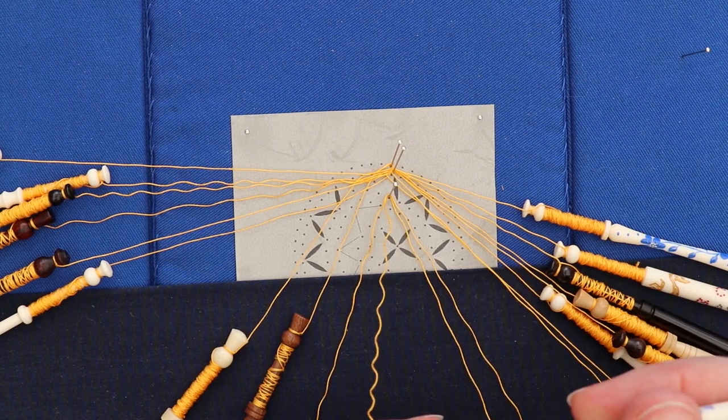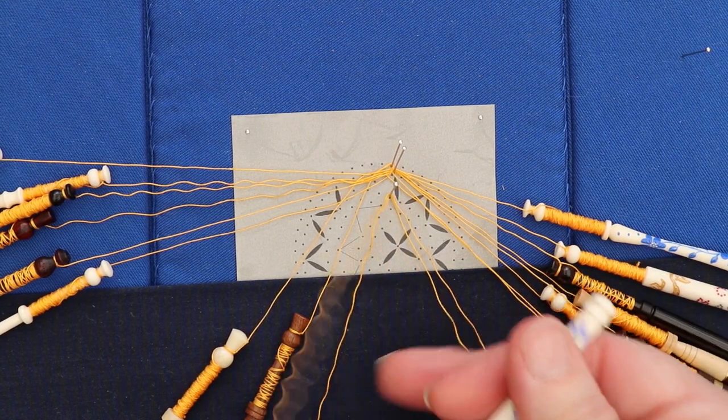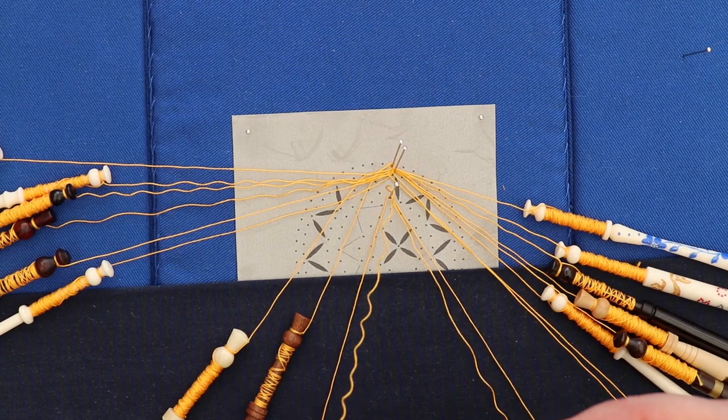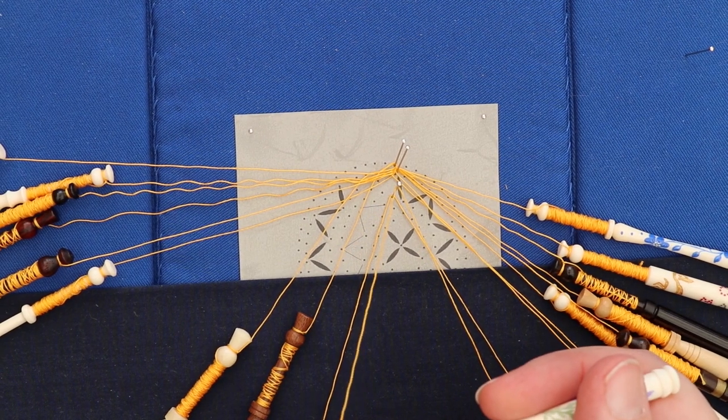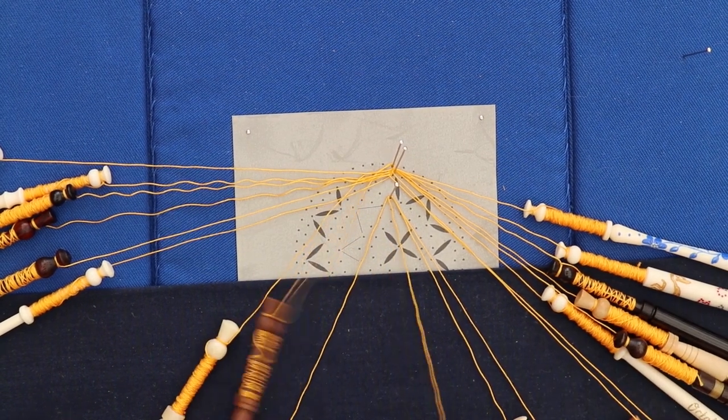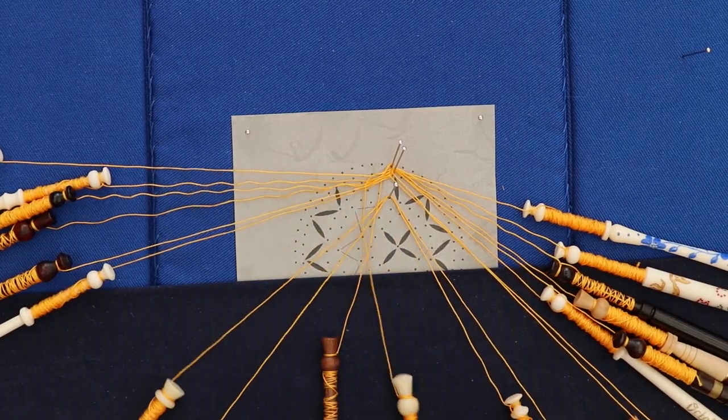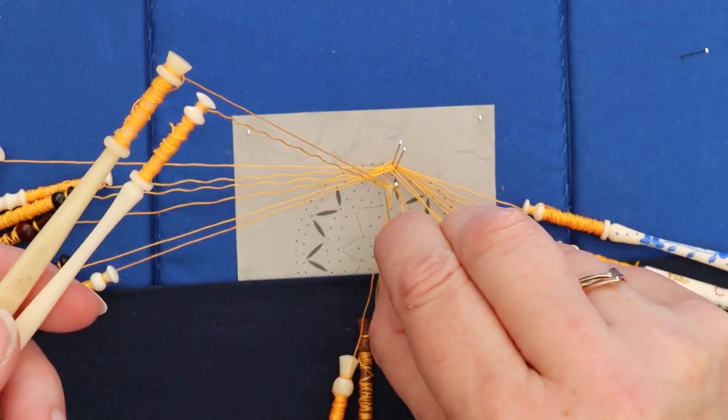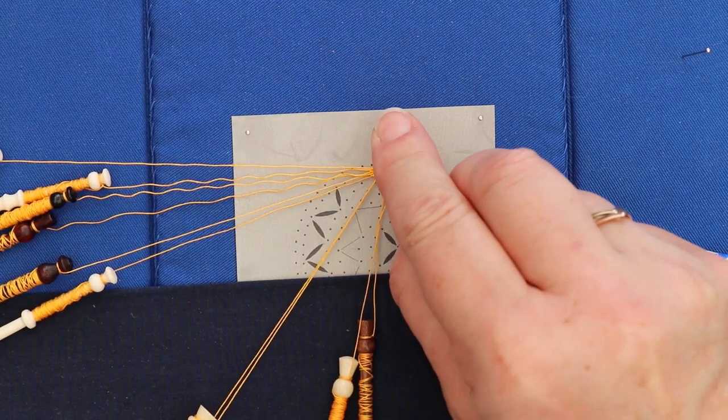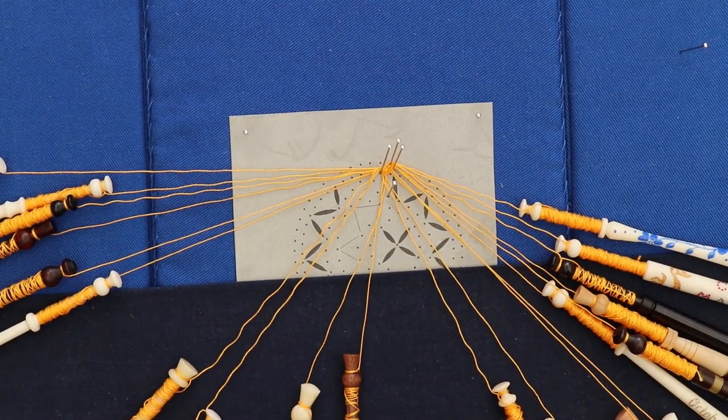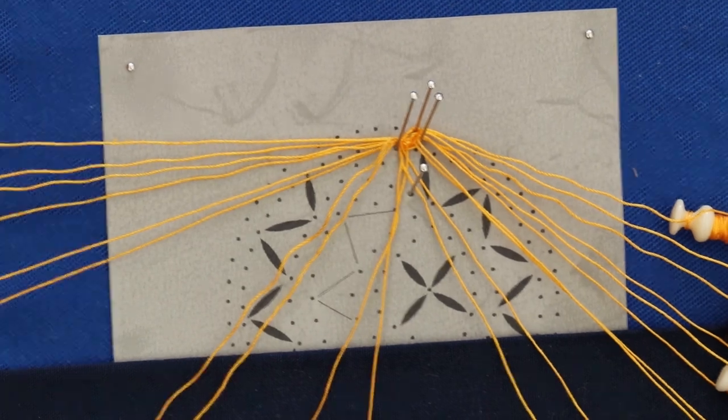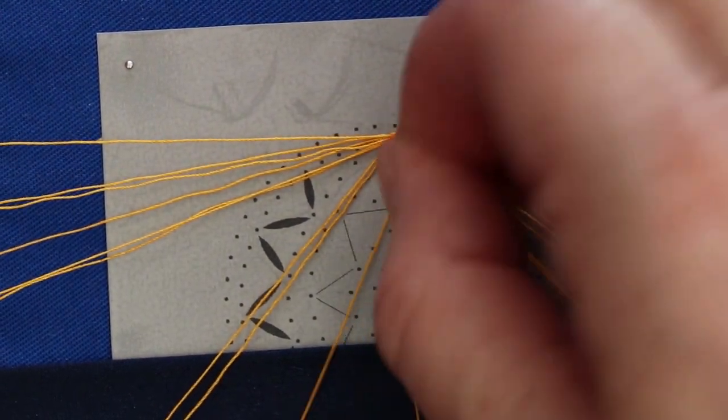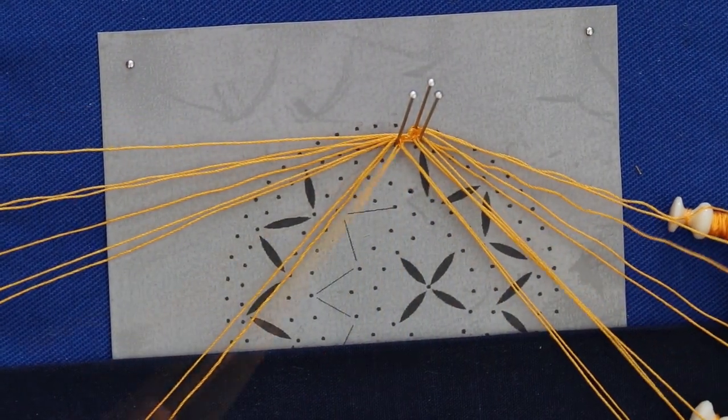This means that the two pairs added in will actually be astride that pin and completely supported. Now just work through the first pair and put your twists on and put the pin out.